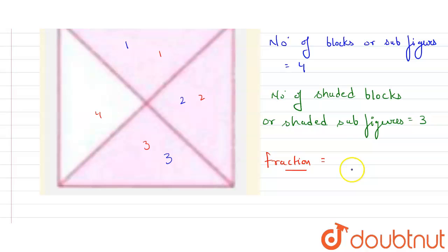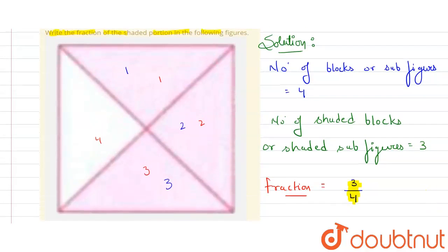Out of four sub-figures in this main figure, we shaded only three. So this is the fraction: out of this denominator, we have done this. Out of these four blocks, we have shaded only three blocks. So the fraction for the shaded figure will be three by four. Thank you.